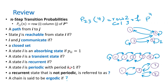A state is periodic with period k > 1 if all paths that return to it have lengths that are multiples of k. For example, state 1 is periodic: the path 1→2 has length 2, the path 1→2→3→4 has length 4 (a multiple of 2), and another path of length 6 is also a multiple of 2. So state 1 is periodic.